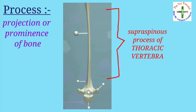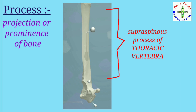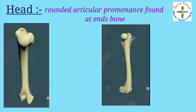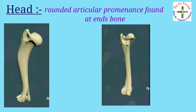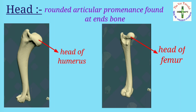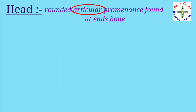Then head — it is a rounded articular prominence found at the end of the bone, jointed to the shaft by a narrow constricted portion called the neck. Example: found in humerus and femur. Articular means something related to joints, and non-articular means using or involving muscles rather than joints.